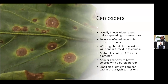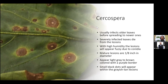They may also have a halo, as you can see in the photo. As time goes on, small black dots will appear within the grayish tan lesions. Some of the best control methods for Cercospora are Concert, Daconil, Heritage, CleanGrow, MillStop, and Protect.